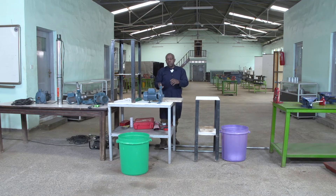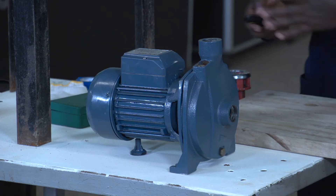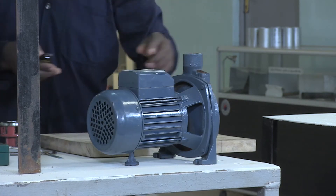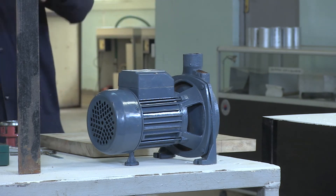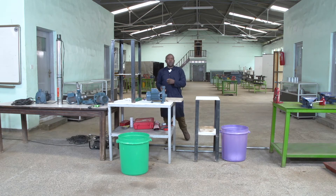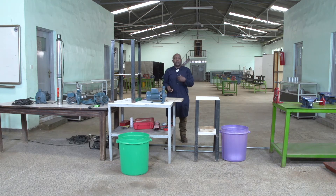There is a hydraulic system on this pump. When we say hydraulic system, we are talking about piping — when you see the pump piping connecting this pump, we call that the hydraulic system. There is also the electrical system, which is the motor. When the motor is working it must be ventilated. The motor and its related components form the electrical installation. There is also a control system, which refers to pressure, flow, and related levels and switches.